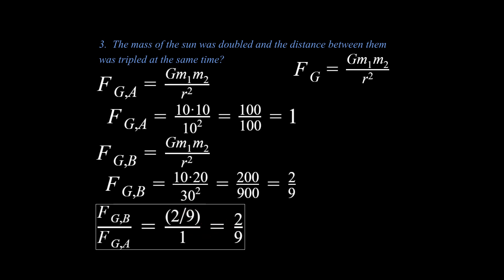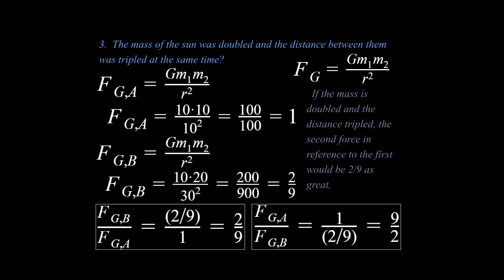It's going to be a lot weaker than what it was before. Or you could say how much greater is the first example compared to the second? We would set it up as a fraction this way. How much greater is the first example in comparison to the second? That would be a relative one value over two ninths, and that would simplify to nine over two. In words, if the masses doubled and the distance tripled, the second force in reference to the first would be two ninths as great.